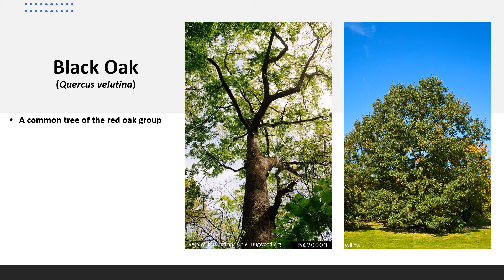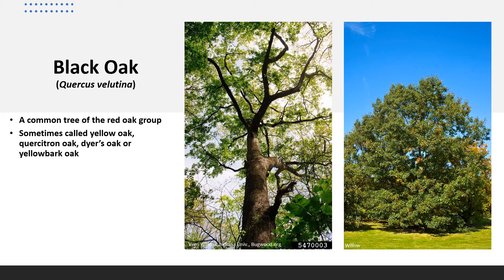Black oak, Quercus velutina, is a common tree of the red oak group. It is sometimes called yellow oak, quercitron oak, dyer's oak, or yellow bark oak.